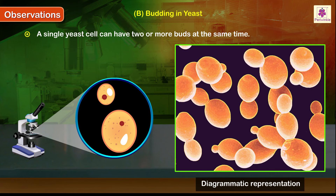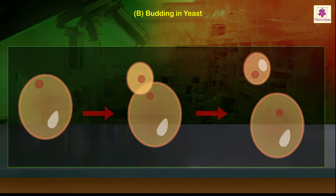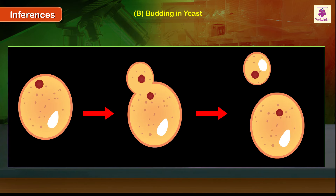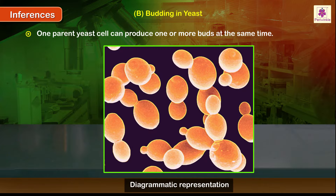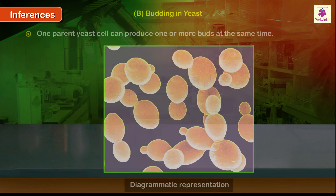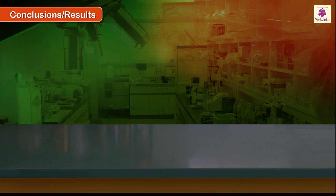A single yeast cell can have two or more buds at the same time. Inferences: yeasts can undergo asexual reproduction by budding. One parent yeast cell can produce one or more buds at the same time. Conclusions or results follow.